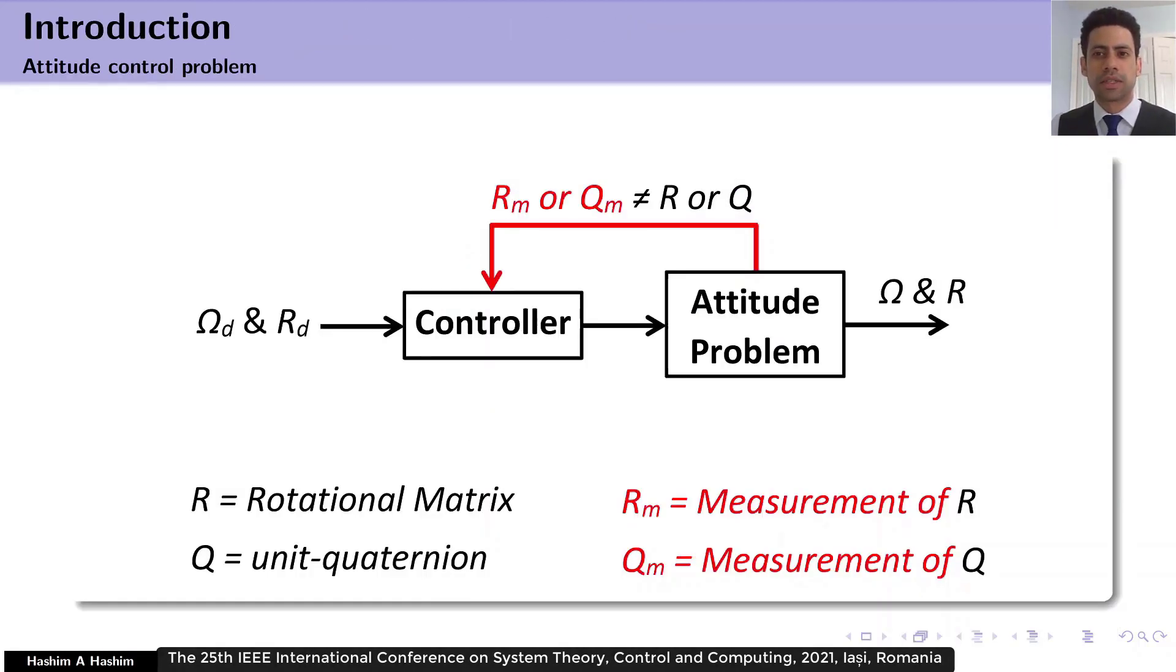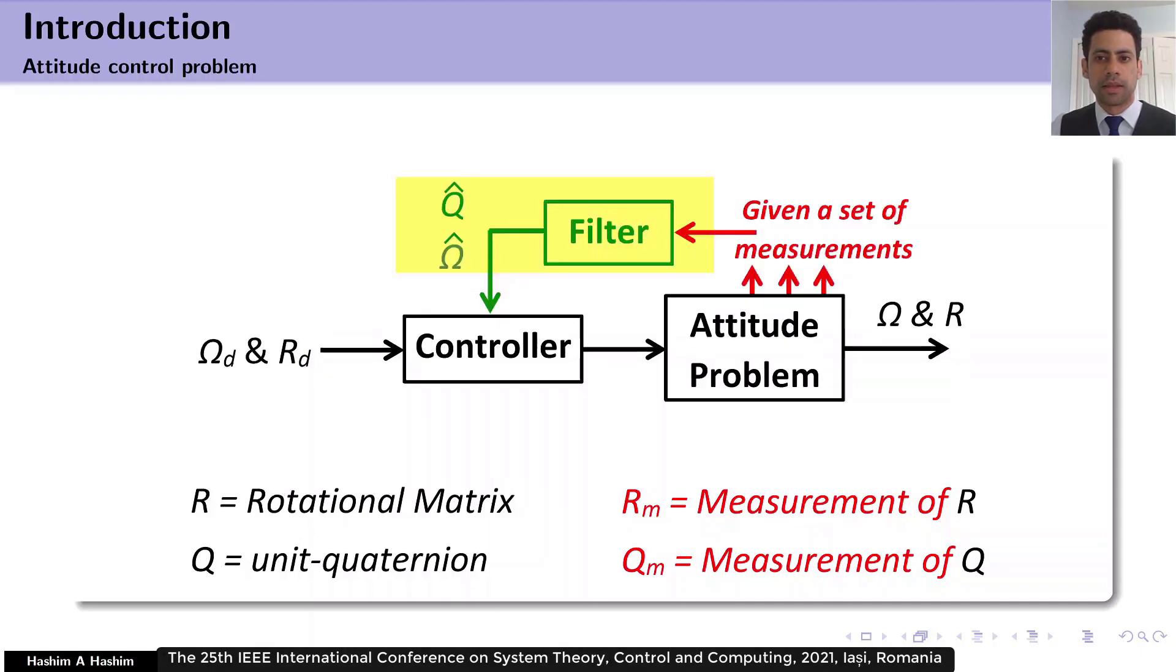As such, an estimator is needed and afterwards controller is required. Attitude can be reconstructed using a set of measurements. However, we cannot use the reconstructed attitude to control the rigid body's orientation and angular velocity. Hence, our objective is to build an observer to observe the unknown attitude and angular velocity. Afterwards, the estimated data are used to successfully control the rigid body's orientation and angular velocity.